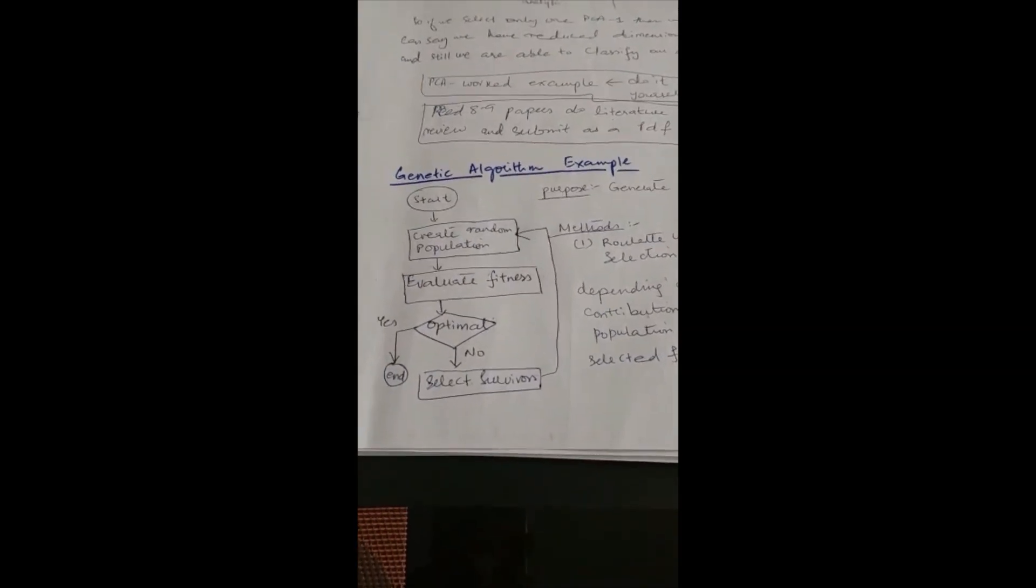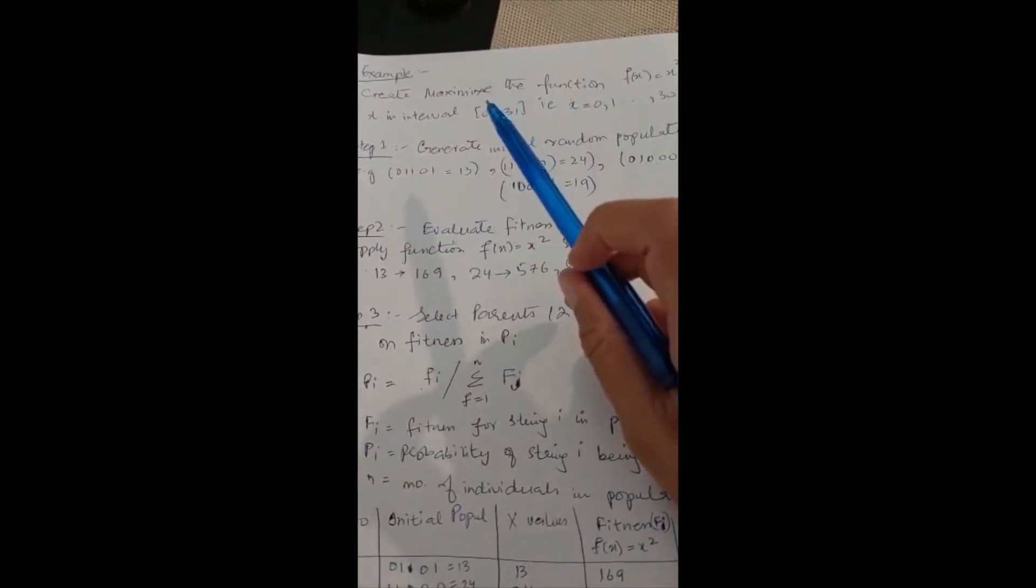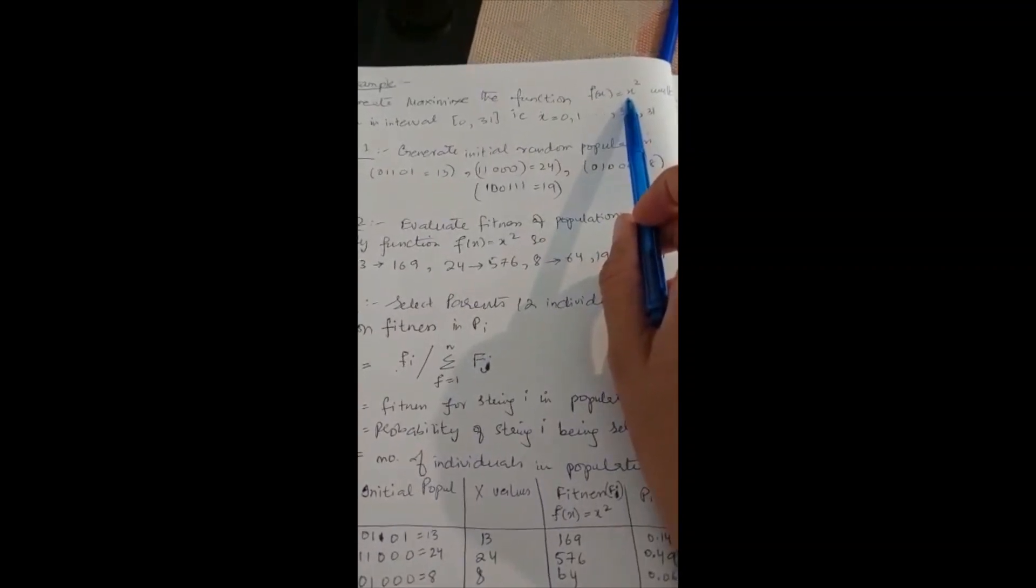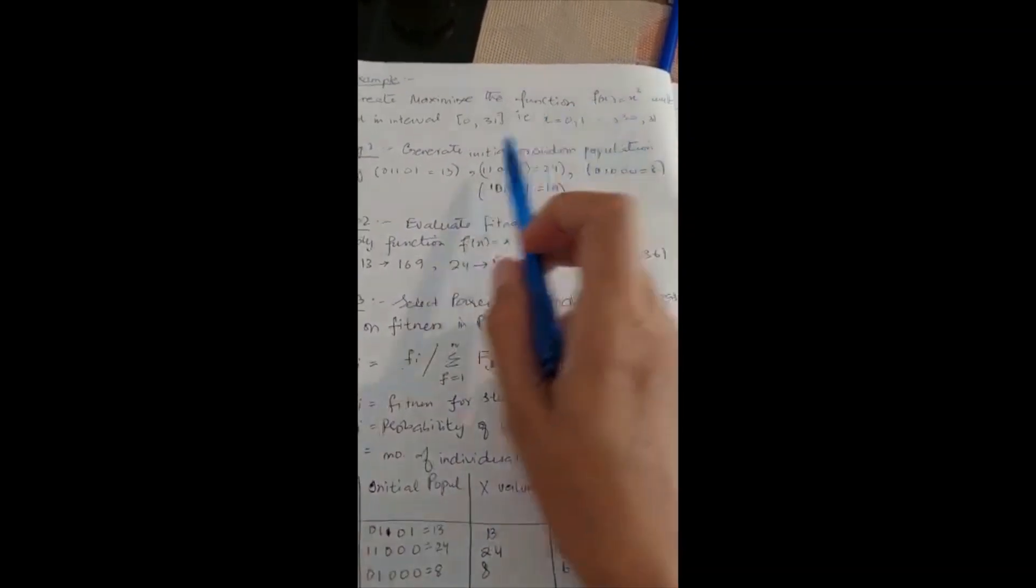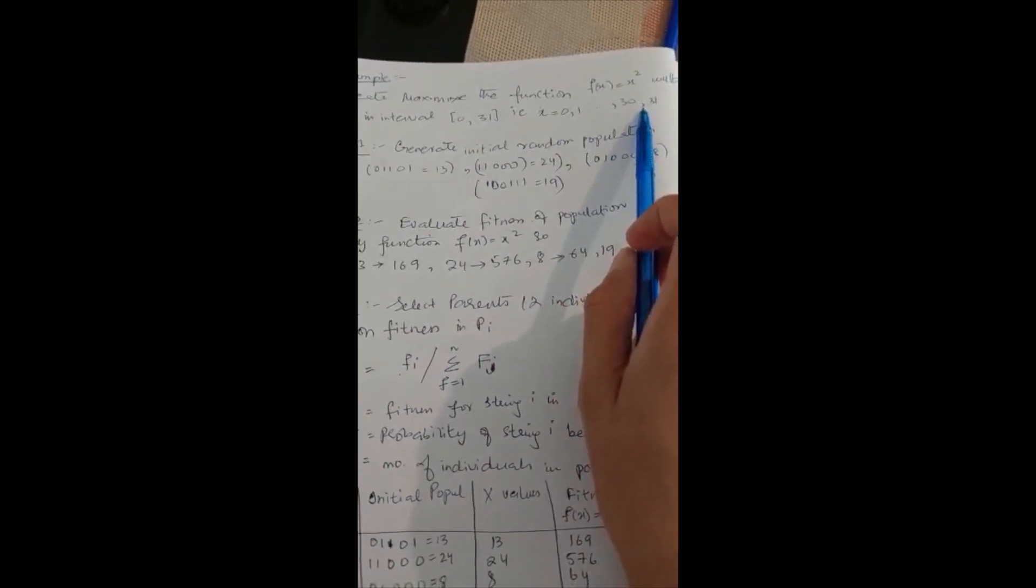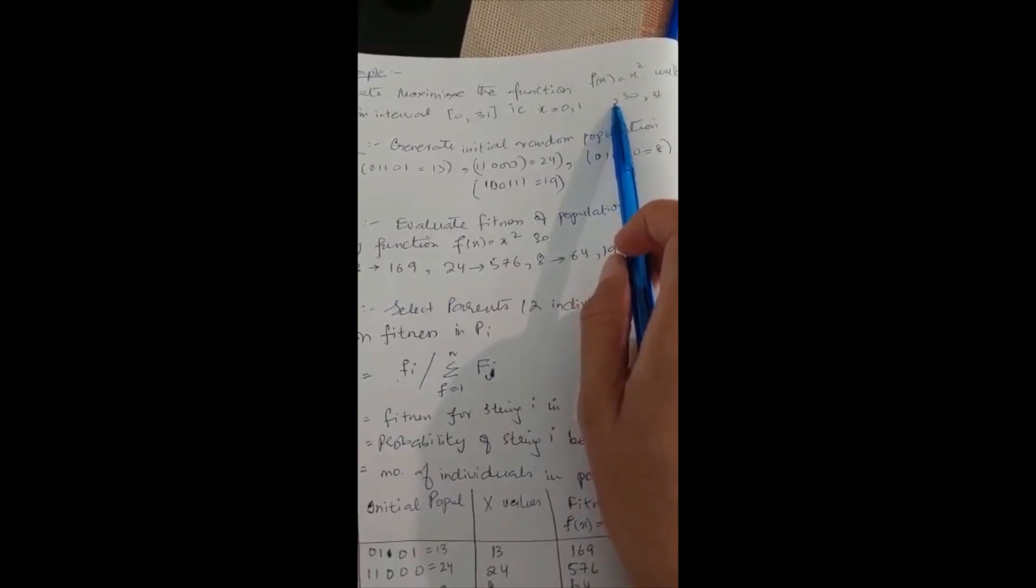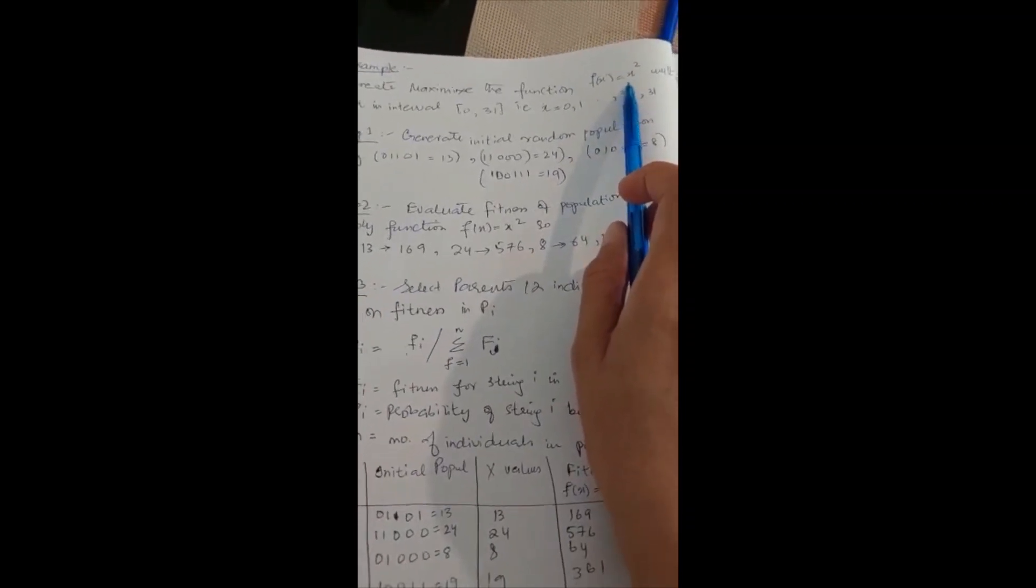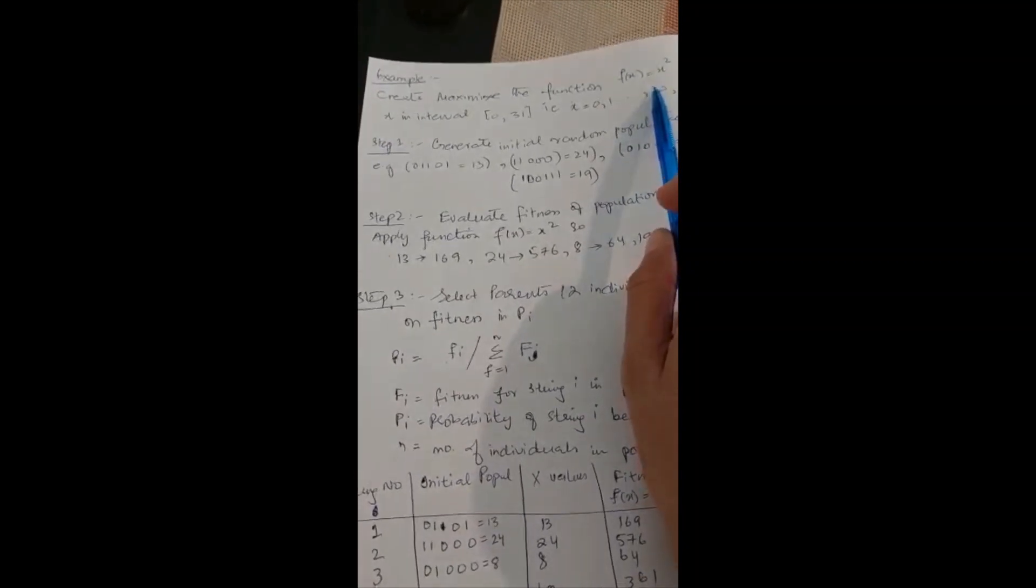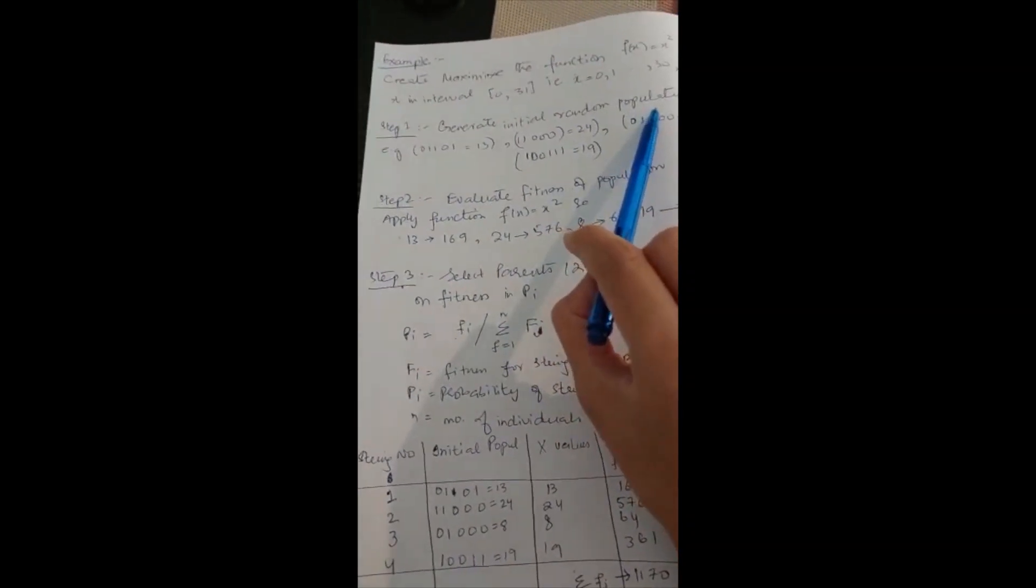This is an overall understanding of how the question will be. We have a question that we have to create and maximize the function f(x) = x squared. We will solve this from genetic algorithm. Now let's explore how effective genetic algorithm is. Step one: generate initial random population. We need to generate a binary population.